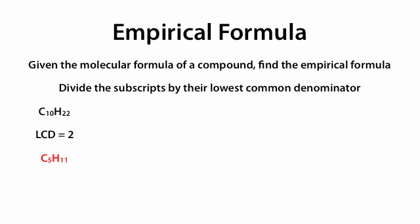Let's look at another example: C₄H₈O₂. We look at 4, 8, and 2 and find the lowest common denominator of all three digits — the lowest common denominator is again 2. We then divide 4 by 2, 8 by 2, and 2 by 2 to get an empirical formula of C₂H₄O.